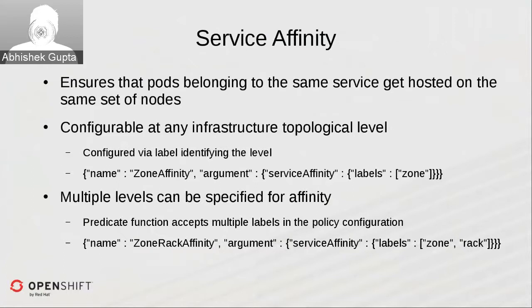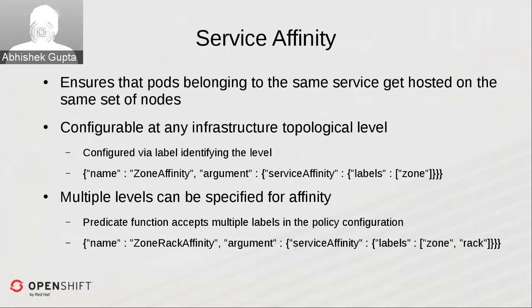Multiple levels can be specified for affinity as well. If you have high latency requirements, you can specify affinity at multiple levels. In the example where affinity is defined at both the zone and rack level, all pods within the same service would be co-located not only within the same zone, but also within the same rack — distributed across different nodes within that rack, but all within it.